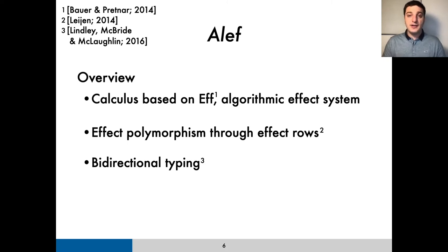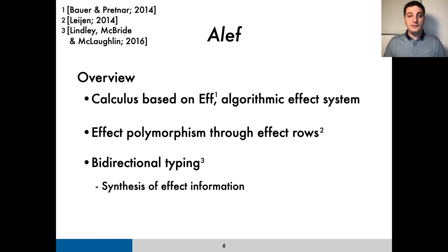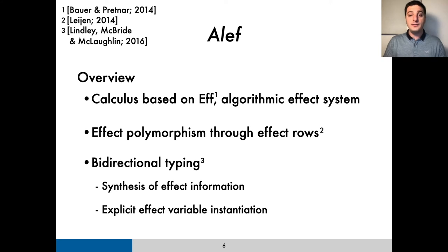We picked this approach taking as inspiration Frank's success at applying this technique to effect systems. However, the variation of bidirectional typing we used is novel for effect systems, because in it, effect information can be synthesized alongside value types. And to make this possible, our typing judgments provide explicit instantiations for the type's effect rows, as I'll explain a little later.